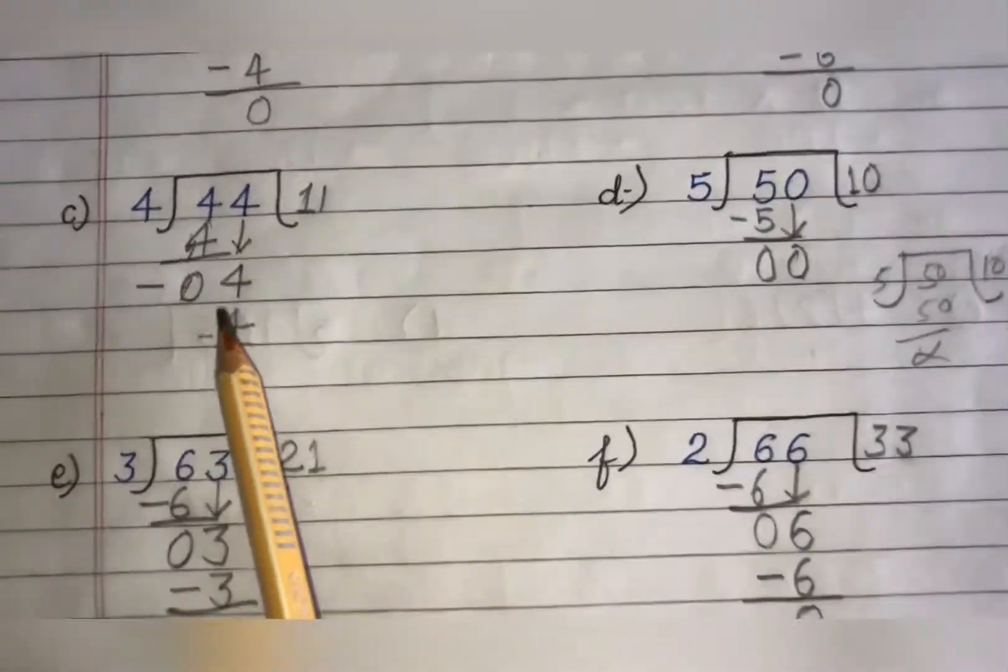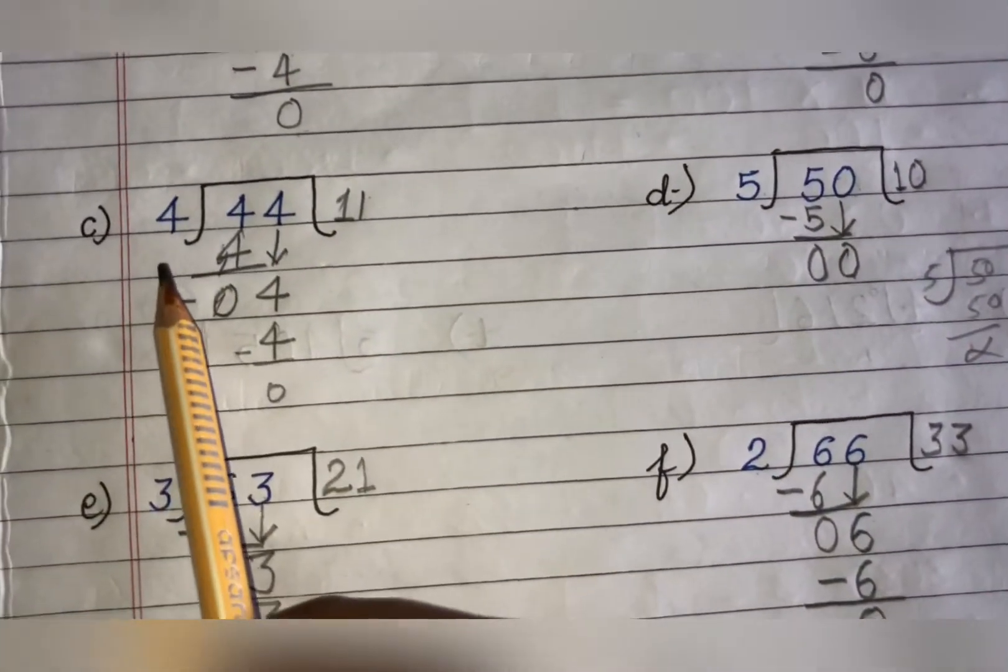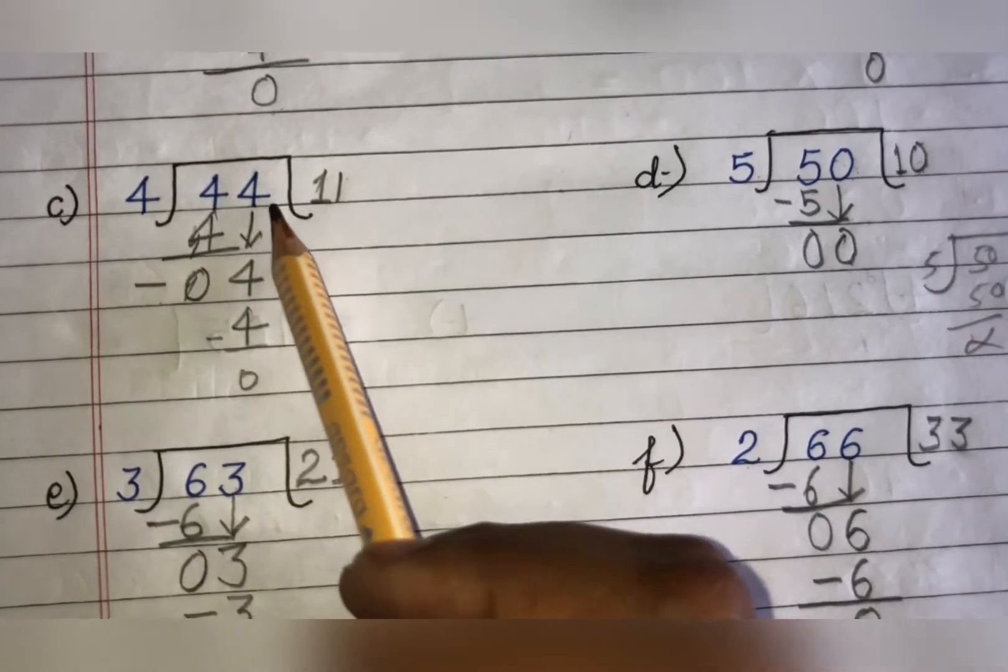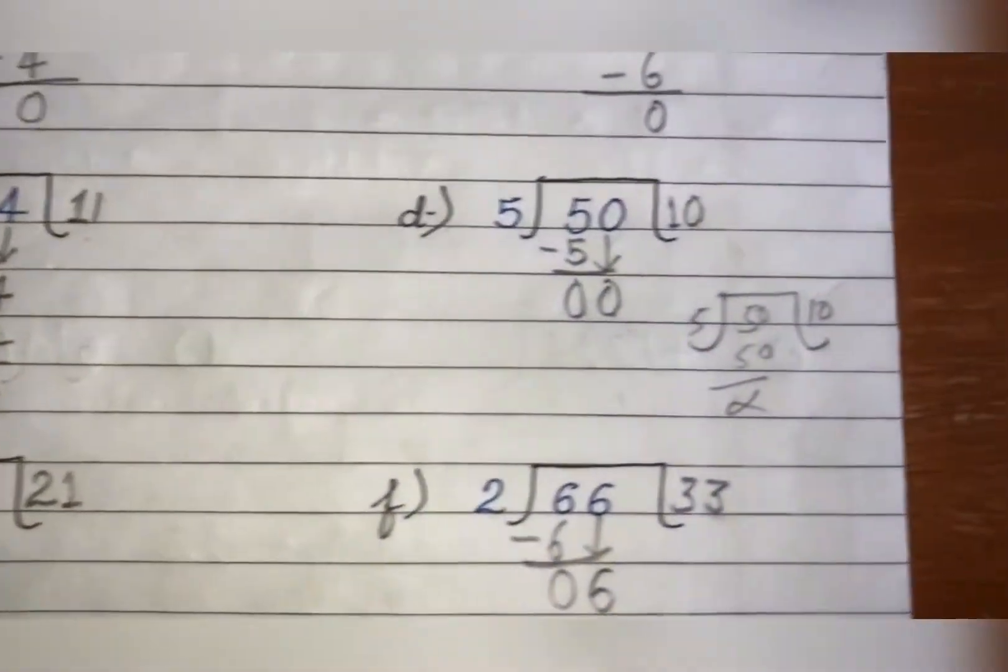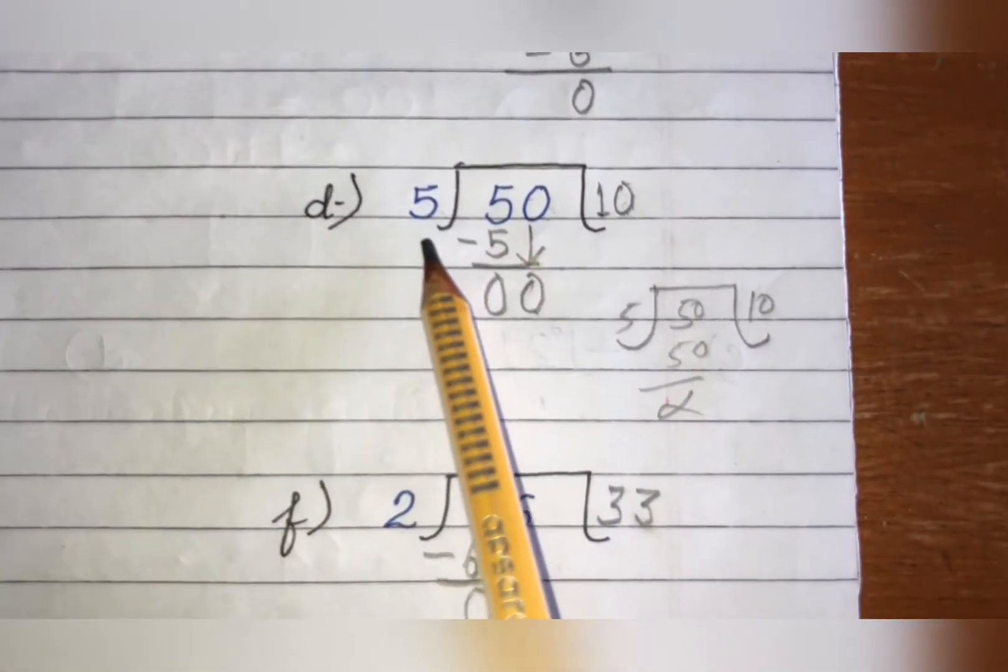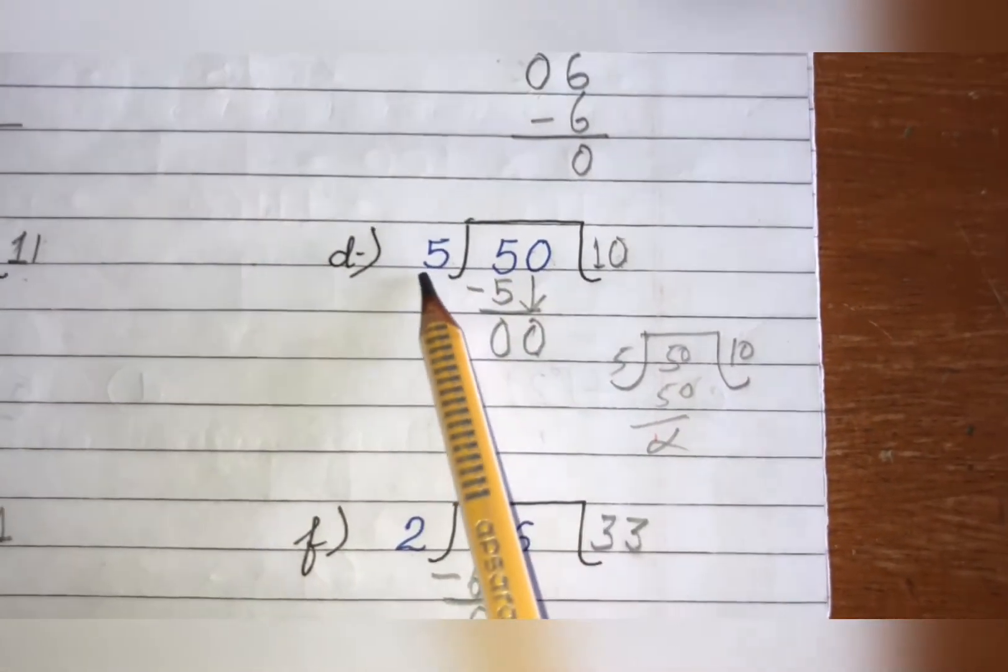Next we have 44 divided by 4. So first you will take 1 4 and then another 4. 4 1 is 4, 4 1 is 4. So same way. Here we have 50 divided by 5.